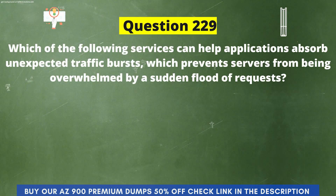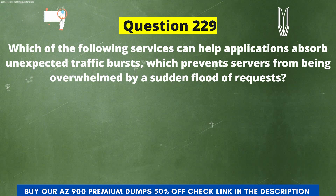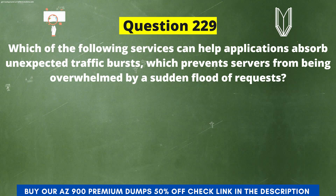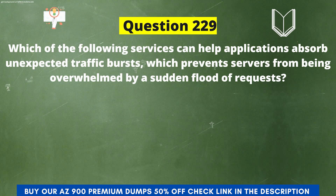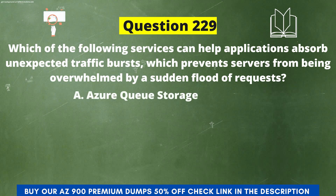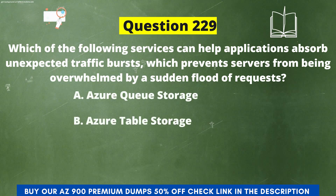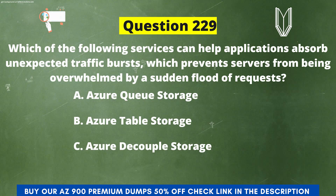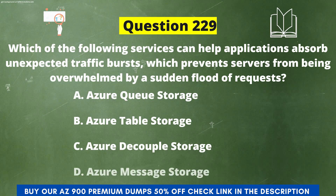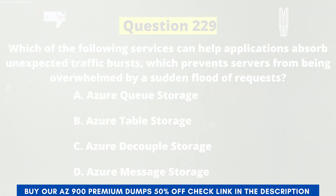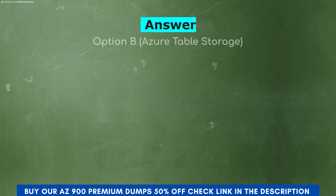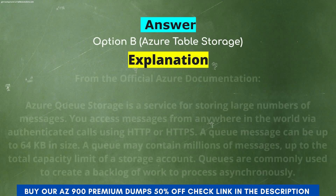Next question: Which of the following services can help applications absorb unexpected traffic bursts, preventing servers from being overwhelmed by a sudden flood of requests? The options are: A) Azure Queue Storage, B) Azure Table Storage, C) Azure Decouple Storage, D) Azure Message Storage. The correct answer is option A, Azure Queue Storage.